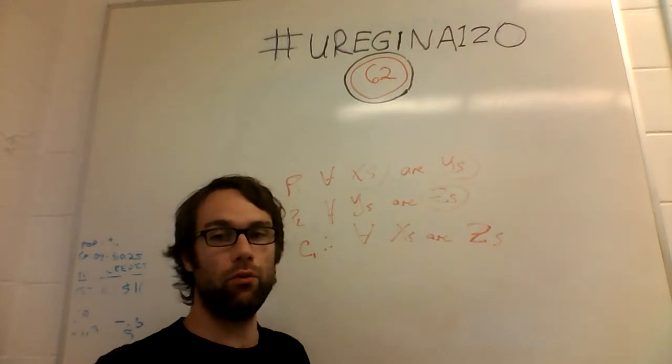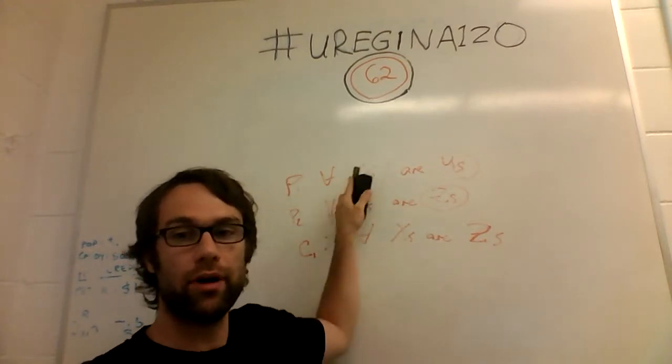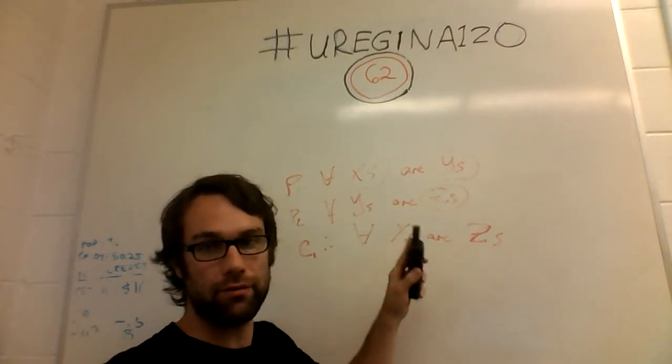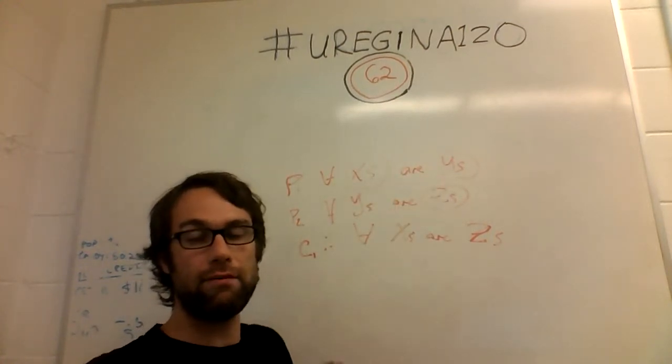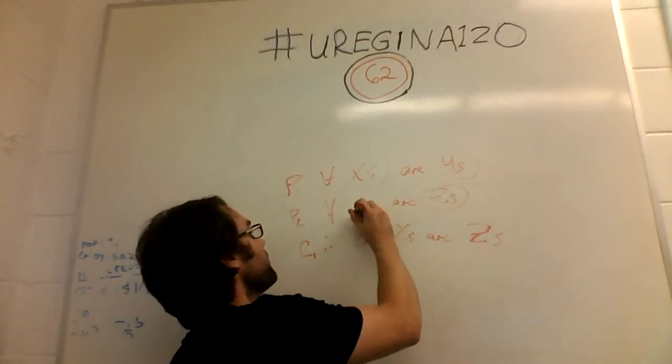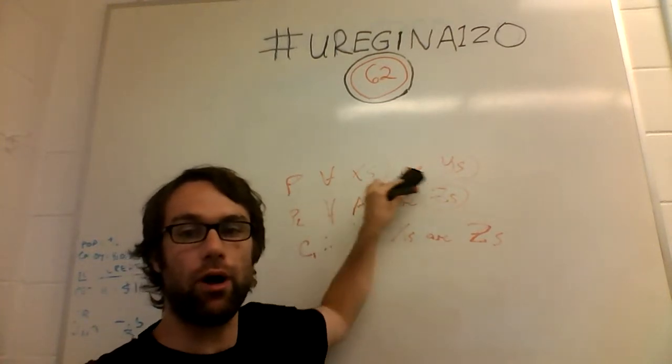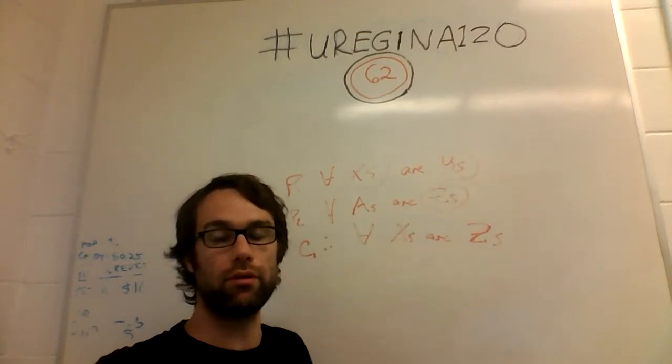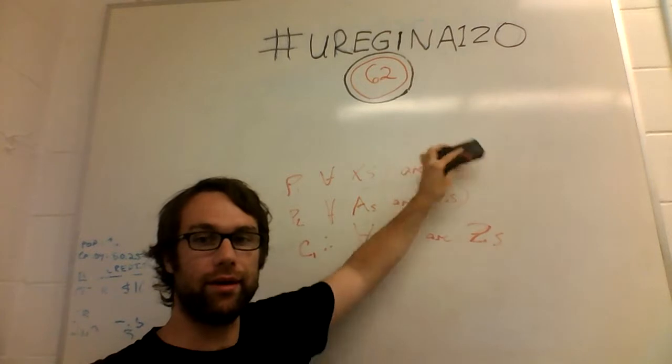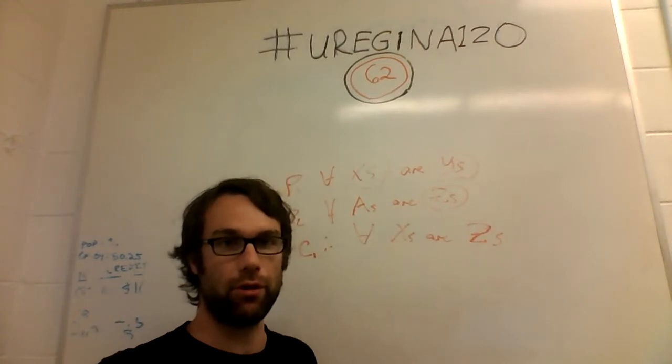So in this particular case, what the four terms fallacy means is that there are four separate kinds of terms in the argument. In this case, we have three separate kinds of terms, which means this is probably a valid argument. We have X, Y, and Z. So how a fourth term would look is, let's say we replace this Y with A. So now we have if X's are Y's, if A's are Z's, therefore X's are Z's. Of course, that isn't the case. There is no connection between Z and X. Now that we've replaced the Y here, so it's no longer a valid argument. This is an example of a four term argument, which is of course not valid.